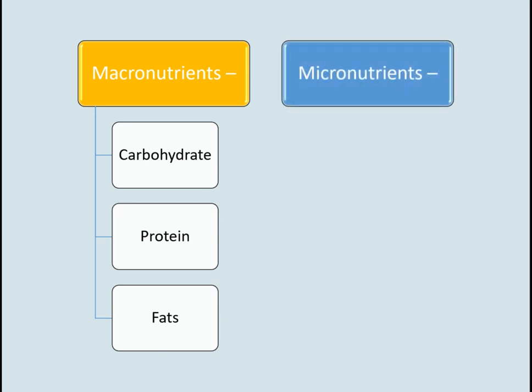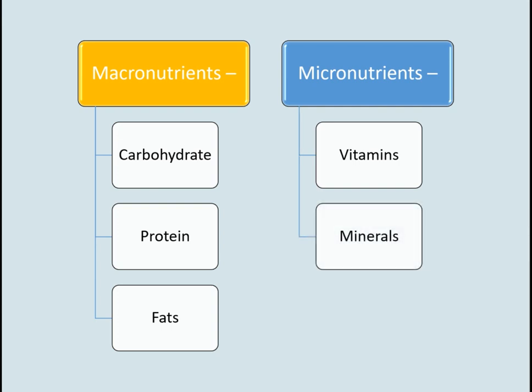Micronutrients consist of vitamins — substances that our body needs to develop and function normally. Vitamins A, C, D, E, K, and B are essential for regular functioning. Minerals are essential elements for health, including calcium, phosphorus, potassium, sodium, chloride, and magnesium.